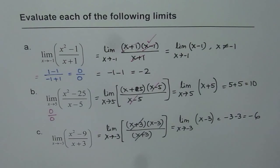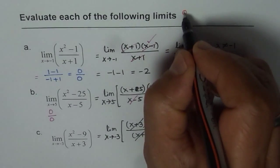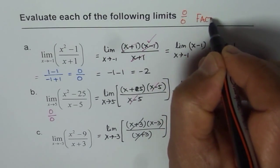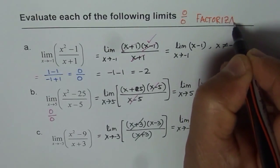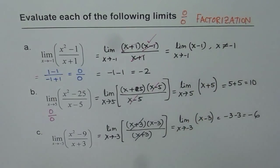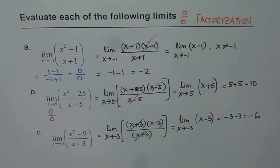That is how you find the limit of a rational function where substitution gives 0 over 0. It indicates a common factor, and therefore factorization is the key. In such cases, factor both numerator and denominator, get rid of the factor which caused 0 over 0, then find the limit of the function as it approaches the given value. I hope that is absolutely clear.